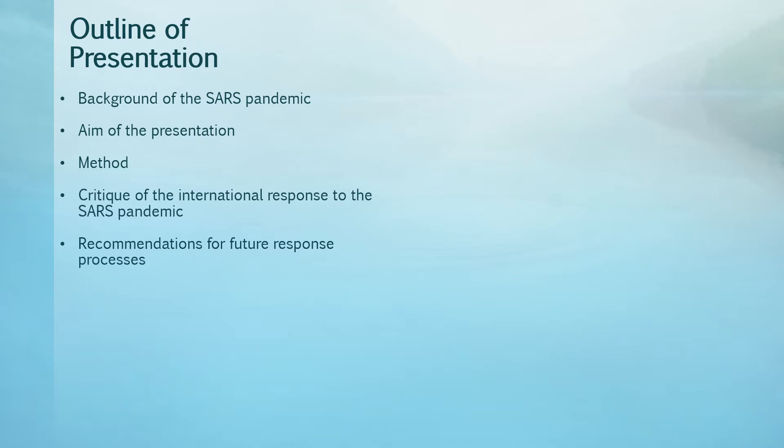The outline of the presentation today will include a background to the SARS pandemic. This will include an overview of the disease, how the outbreak of SARS started, and having a One Health perspective on SARS. I'll also include how SARS had an impact on the international health regulations. I'll then explain the aim of the presentation, give my method on how I've obtained literature, and give my critique of the SARS pandemic, followed by recommendations for future response processes to avoid future pandemics of similar nature.